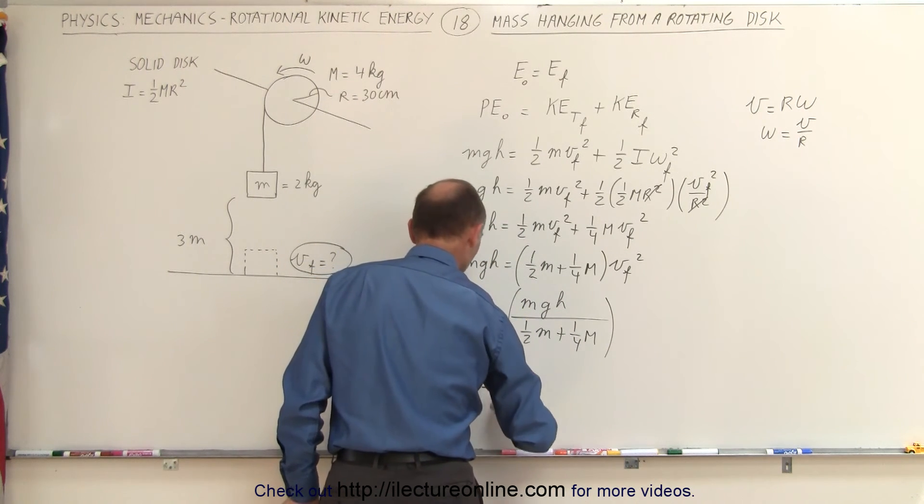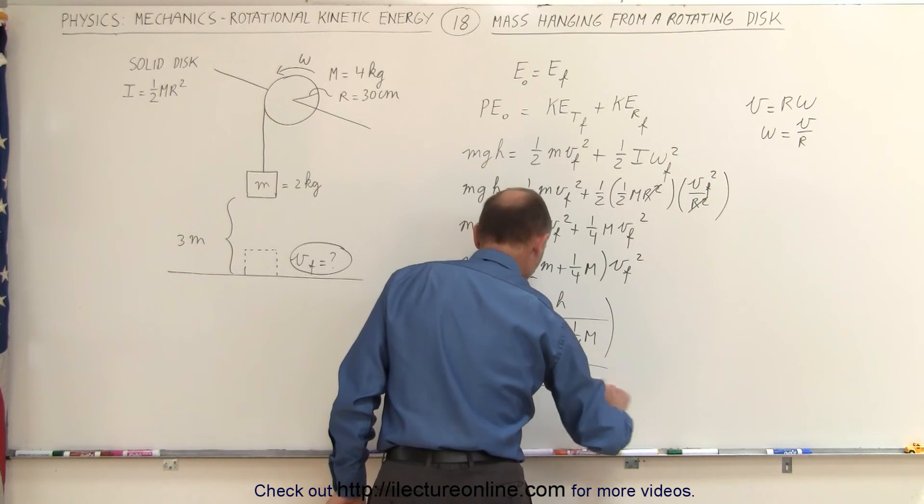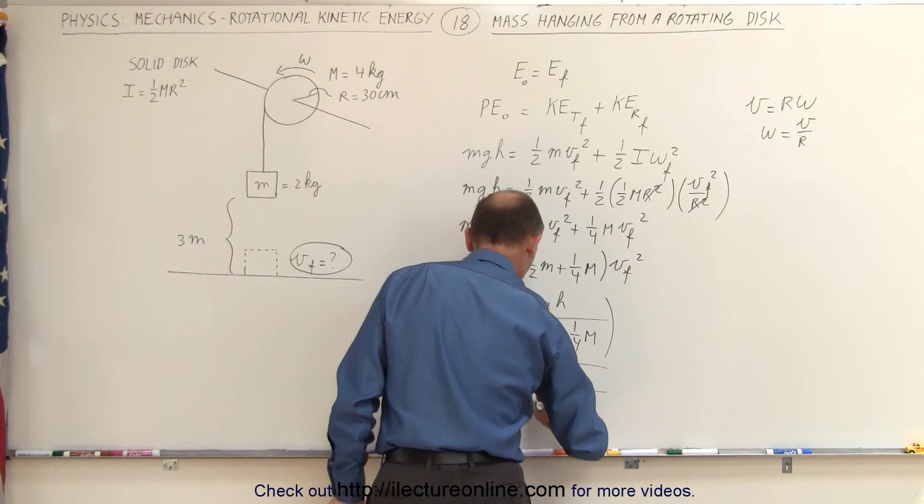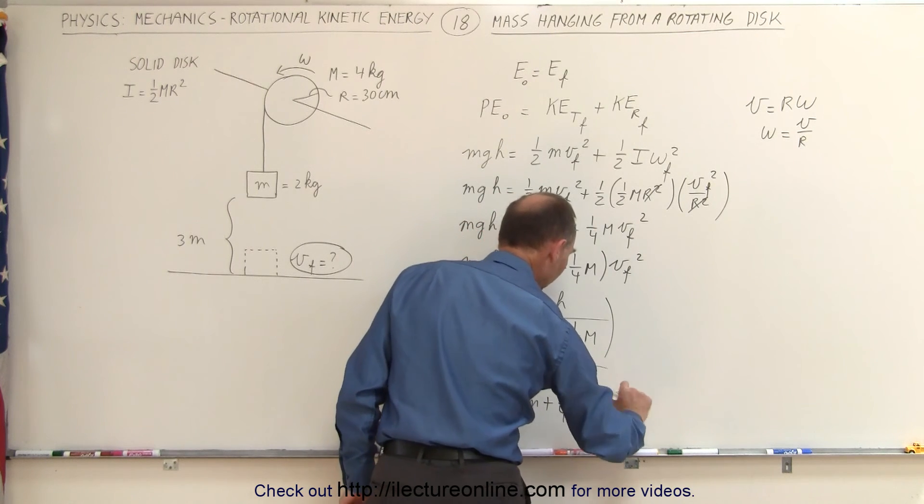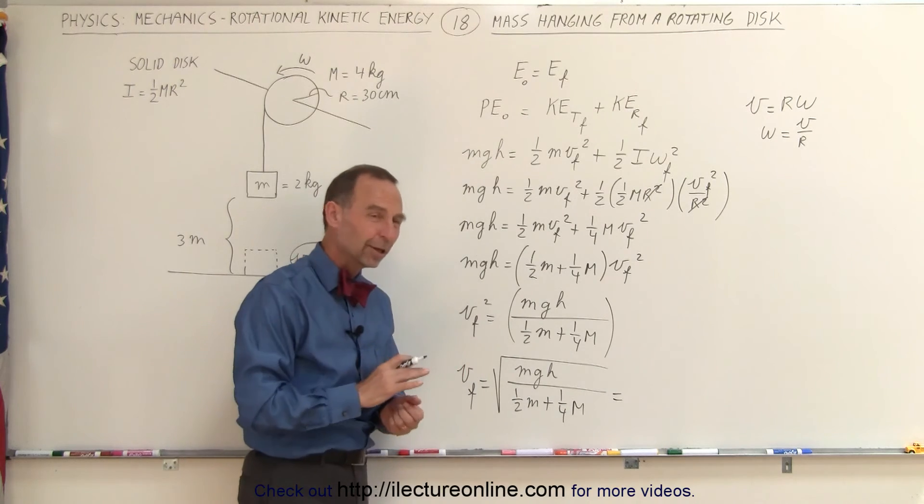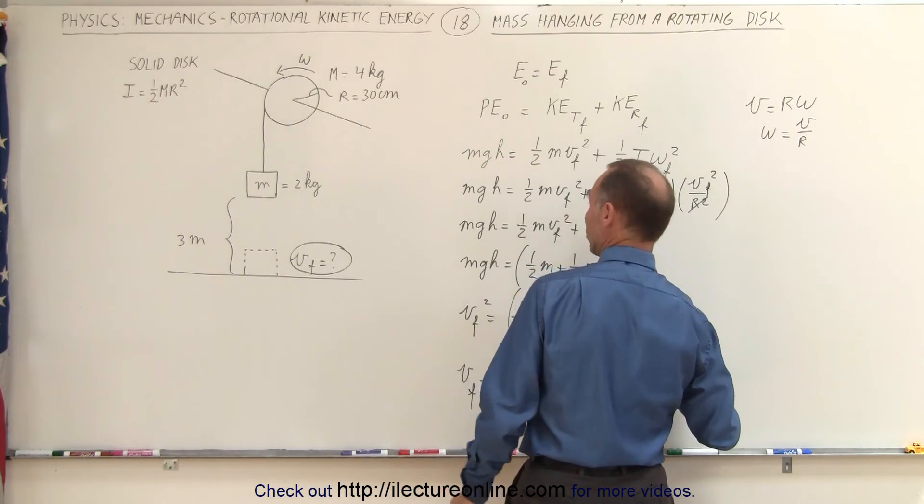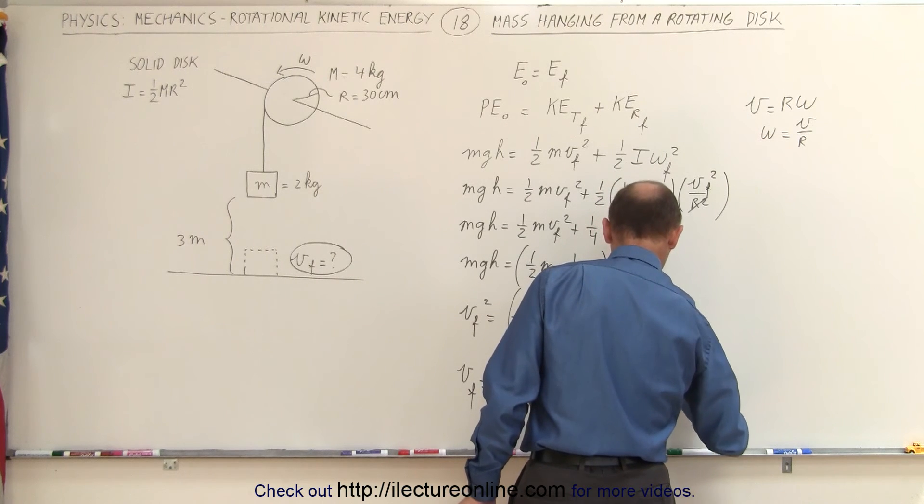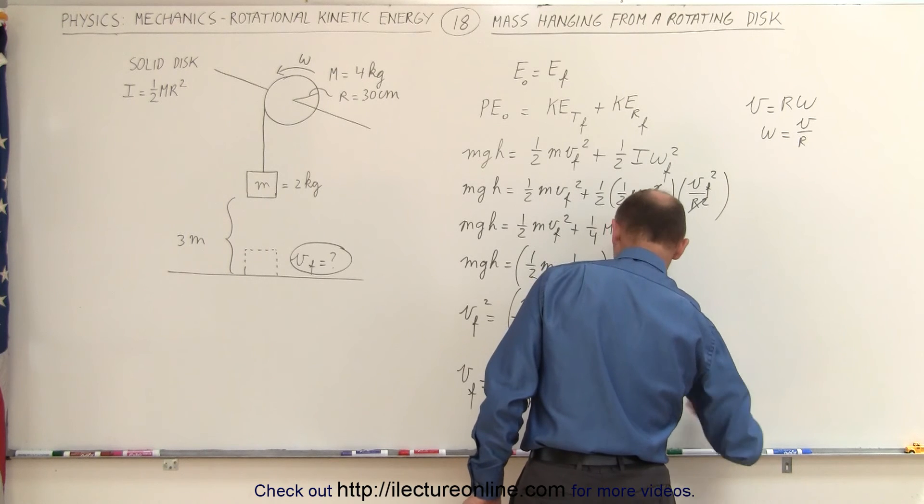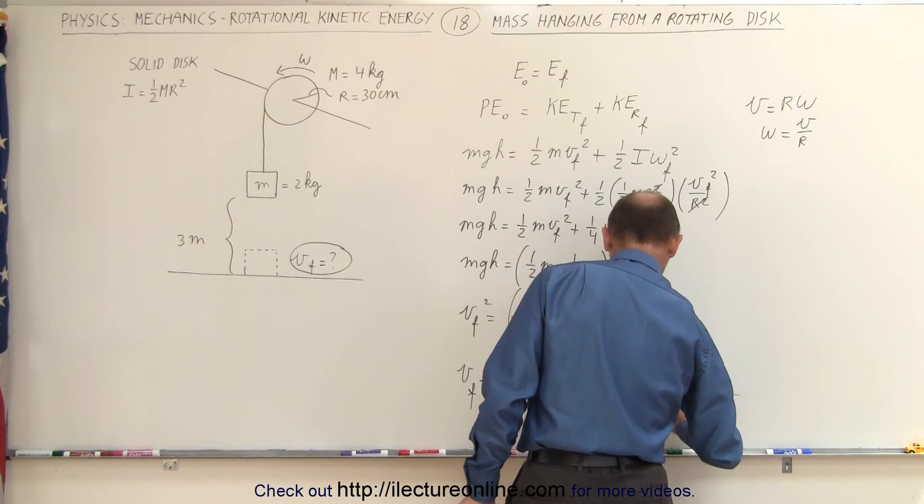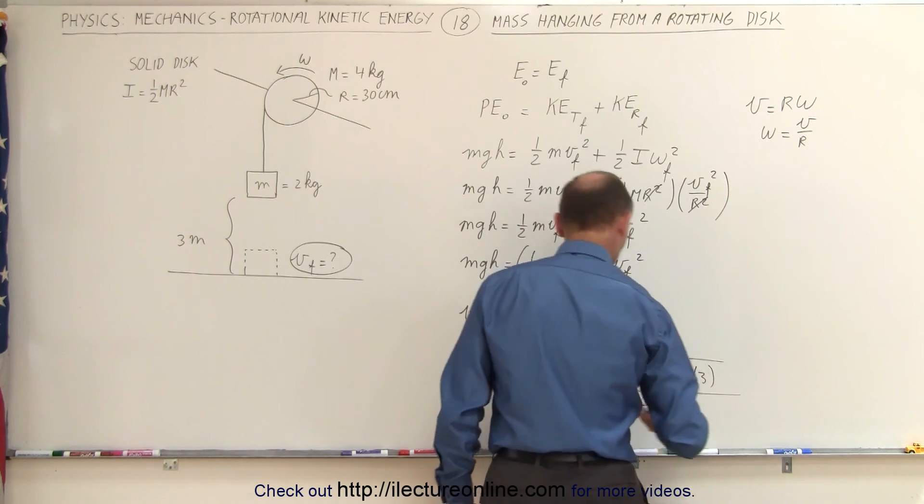v final is equal to the square root of mgh divided by one-half times the mass of the object plus one-quarter times the mass of the disk. Now we plug in the numbers and see what we get. The square root of, that would be two kilograms times 9.8, started from a height of three meters, divided by one-half times two plus one-quarter times four.